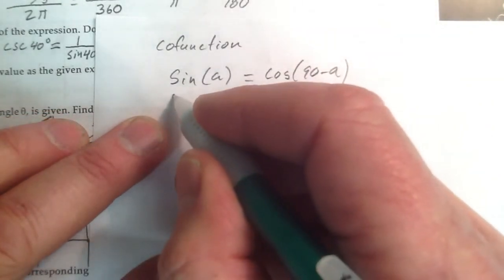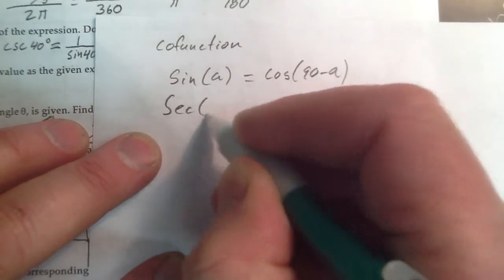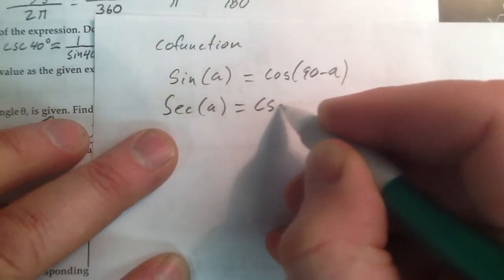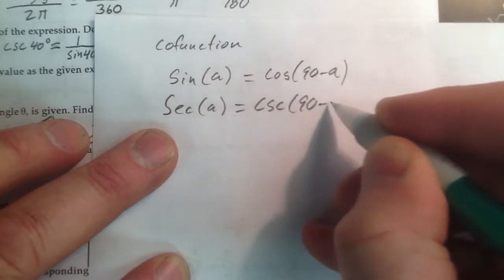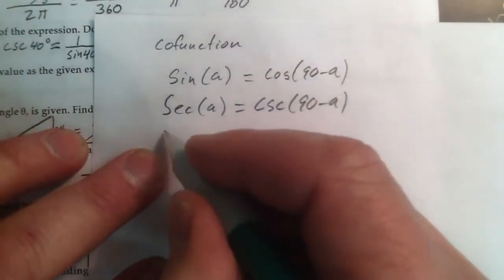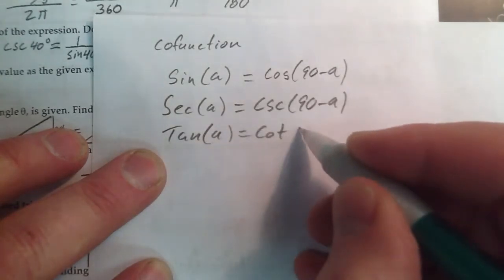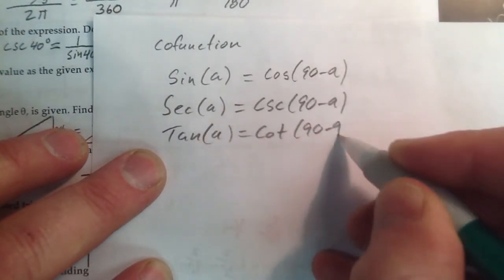The secant is equal to the cosecant of the complement. The tangent is equal to the cotangent of the complement.